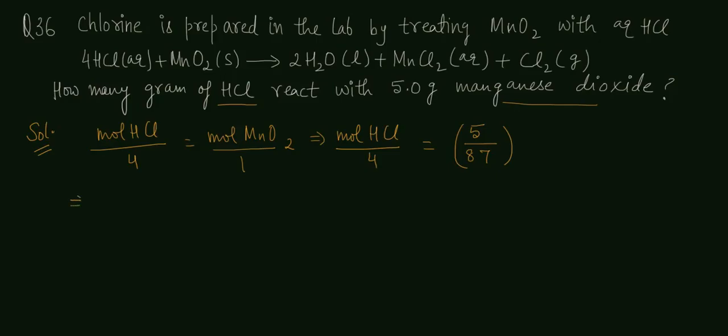So here you can calculate the mol of HCl. Mol HCl equals 4 times mol MnO2, which is 5 by 87.